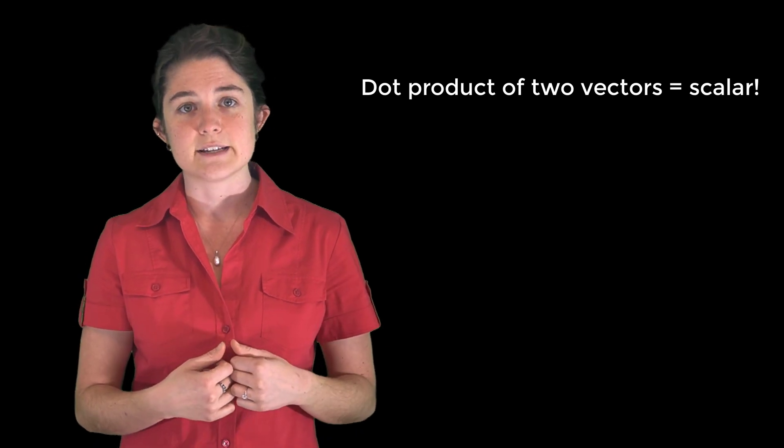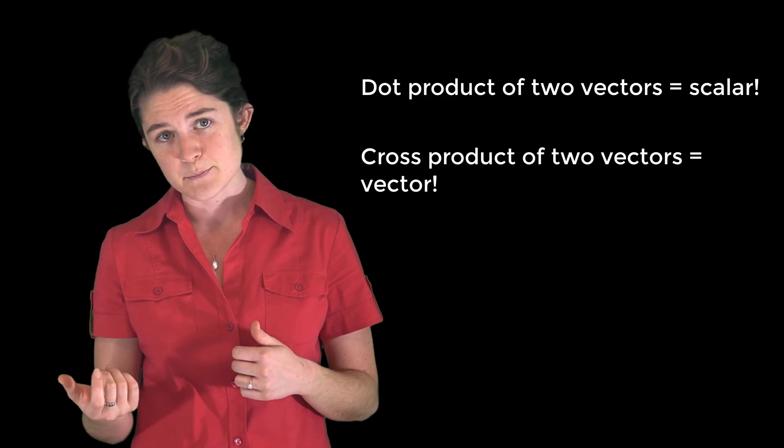Remember to carefully keep track of your vectors and scalars. Dot products and cross products are both operations that require two vector inputs, but the result of a dot product is a scalar, and the result of a cross product is a vector.